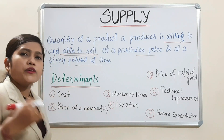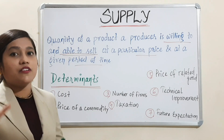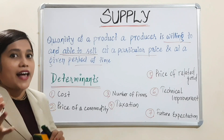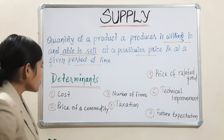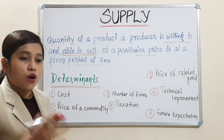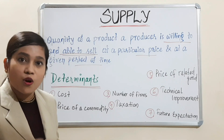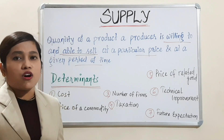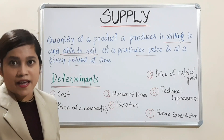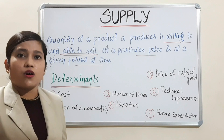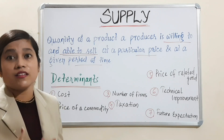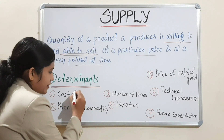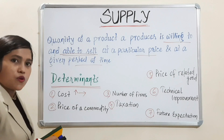Next is determinants. What do you mean by determinants? Determinants are the factors which affect the supply. The first one is cost. What do you mean by cost? Cost is actually the price of the raw materials which we are using. Let's say I am a rice farmer — my cost will be the cost I pay for the land I am using, the land rent, the cost for seed, fertilizer, and irrigation. So what happens when this cost will increase?